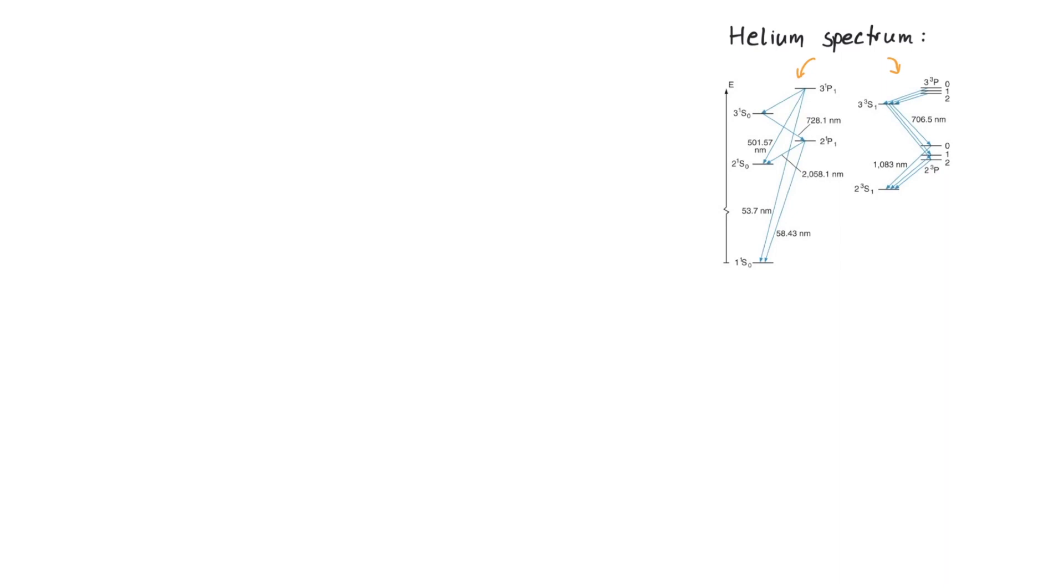This seemed to originate from two different kinds of atoms, but since chemical analysis had identified all of the gas to be helium, people believed that there were actually two kinds of helium, called parahelium and orthohelium.